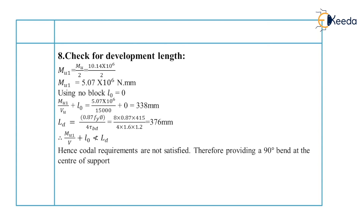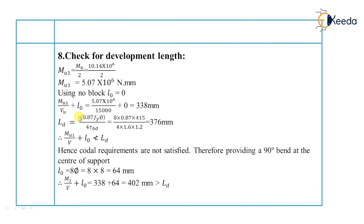Therefore, we provide a 90-degree bend at the center of the support. For a 90-degree bend, L0 equals 8φ equals 8 × 8 mm equals 64 mm. So Mu1/V + L0 equals 338 plus 64 equals 402 mm, which is greater than the development length of 376 mm. Now our codal requirements are fully satisfied. We have completed the design of the one-way slab.